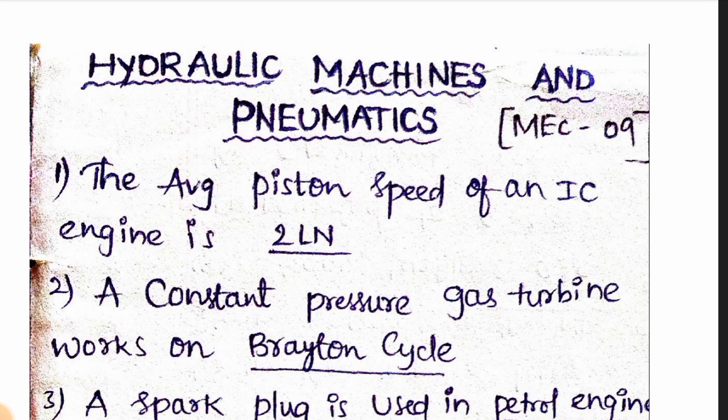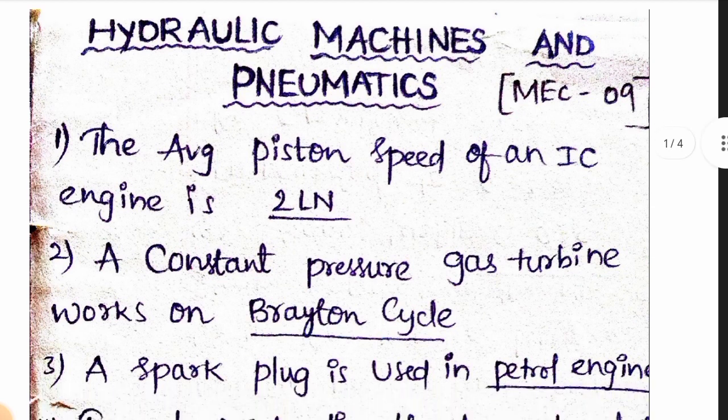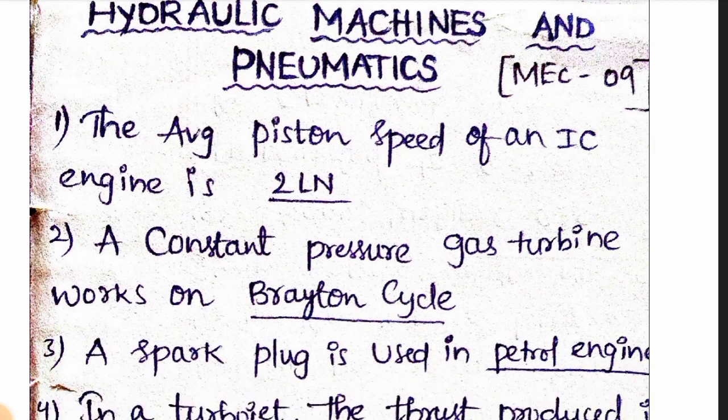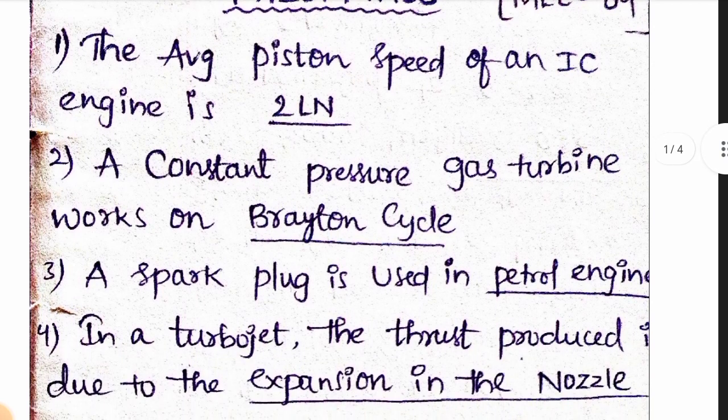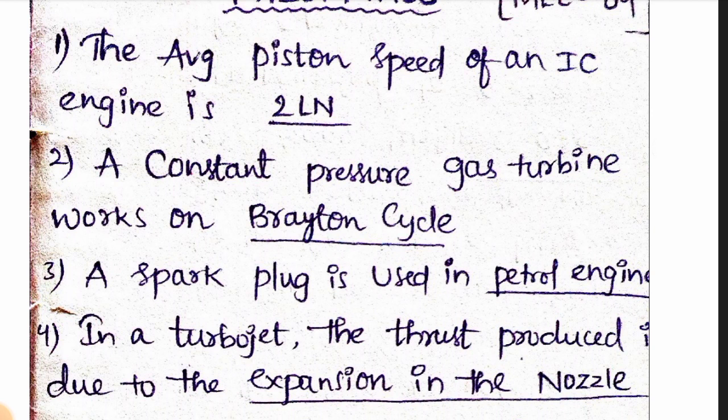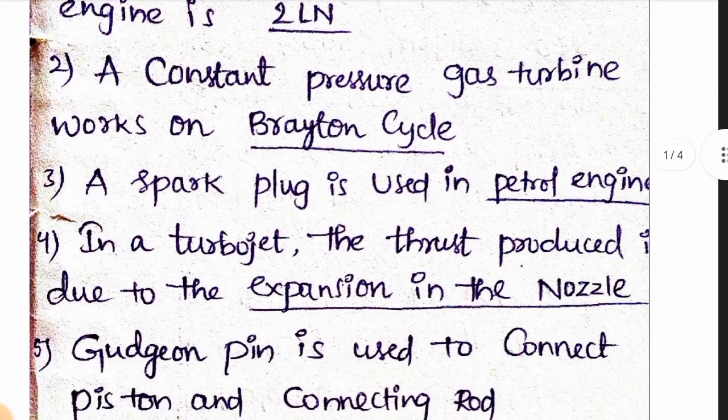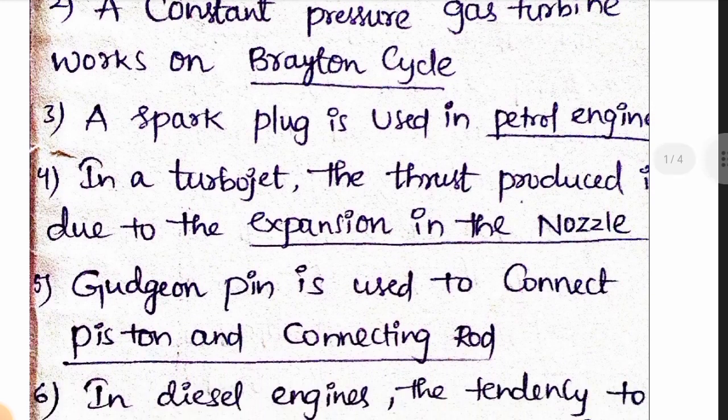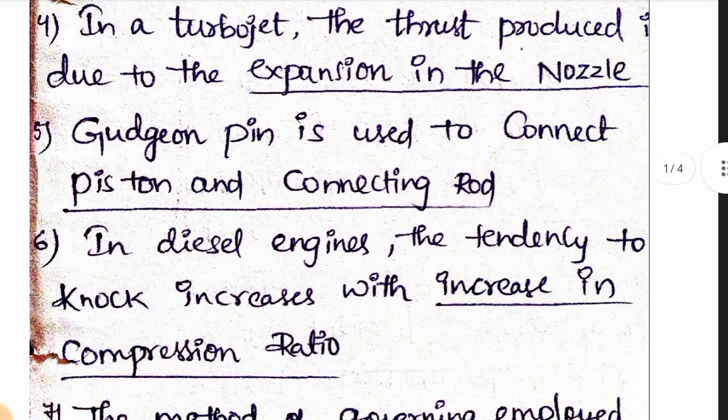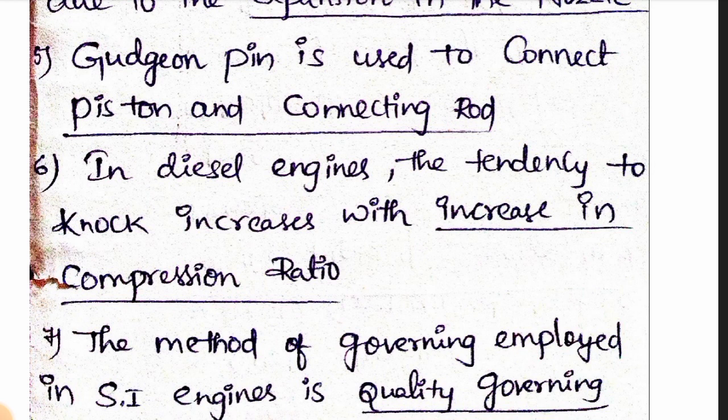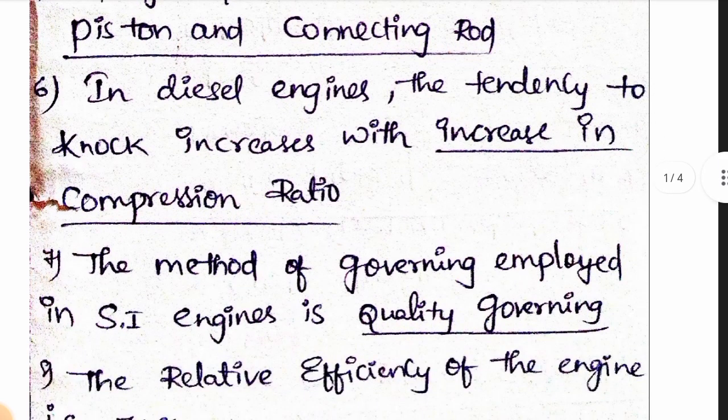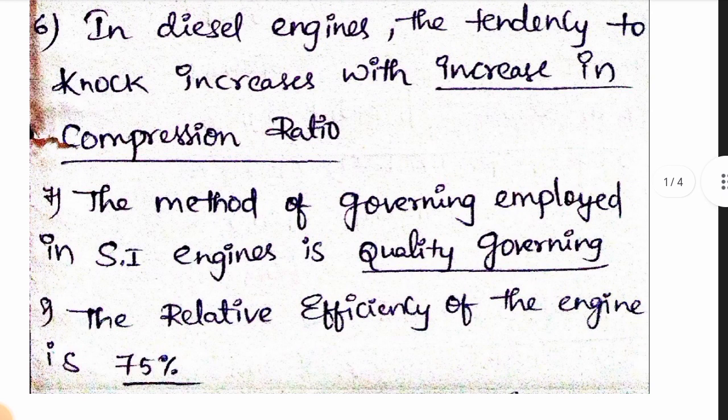Hydraulic machines and pneumatics series - this content for mechanical is worth nine marks. First question: the average piston speed of an IC engine is 2LN. A constant pressure gas turbine works on Brayton cycle. A spark plug is used in petrol engine. In a turbojet, the thrust produced is due to the expansion in the nozzle. Gudgeon pin is used to connect the piston and connecting rod. In diesel engines, the tendency to knock increases with increase in compression ratio. The method of governing employed in IC engines is quality governing.